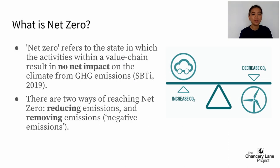Net zero is the point where there is no net impact on the climate from GHG emissions. There are two main ways of reaching net zero: reducing emissions and removing emissions. Activities that reduce emissions include switching to low-emissions technologies like solar power and improving the energy efficiency of buildings. Negative emissions are things like carbon sinks — both natural ones such as forests and man-made ones such as carbon capture and storage technology.